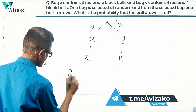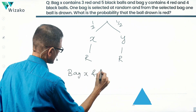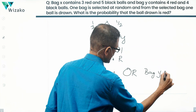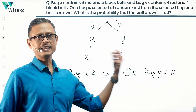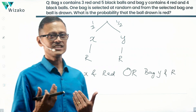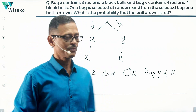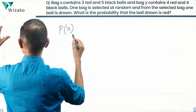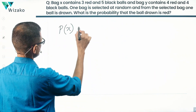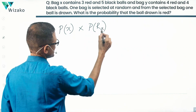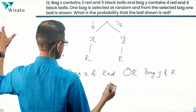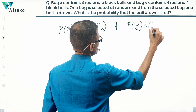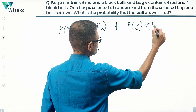We could have selected bag X and got a red ball from it, or we could have selected bag Y and the ball selected could have been red. Whenever you see 'and' as a conjunction, multiply; whenever you see 'or', add. So we write: probability of selecting bag X and getting a red ball out of it, plus probability of selecting bag Y and getting a red ball out of it.